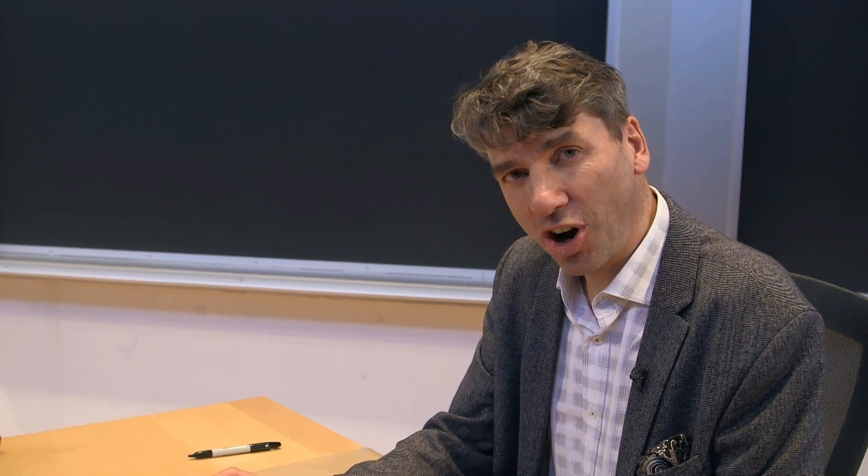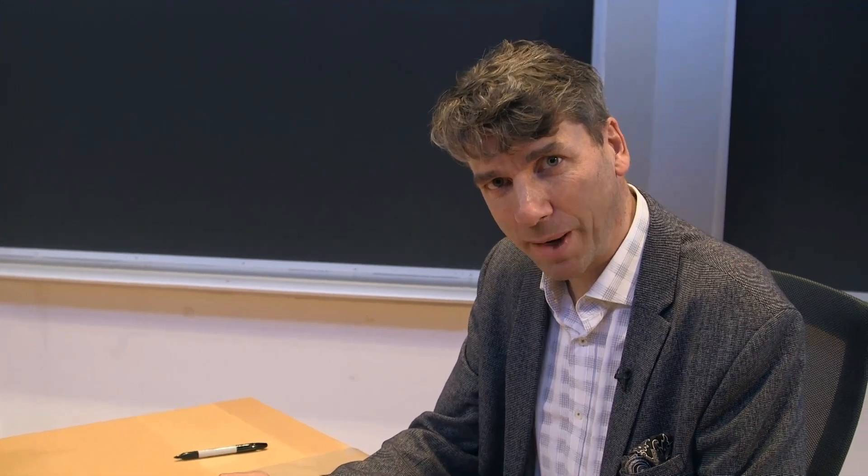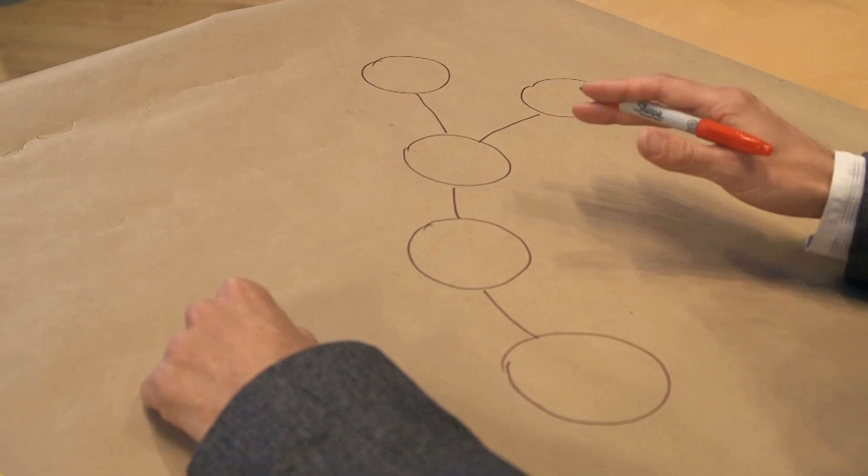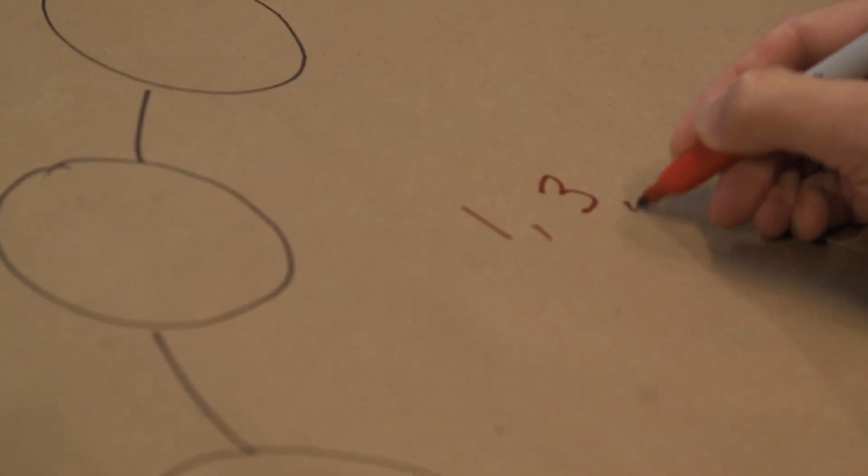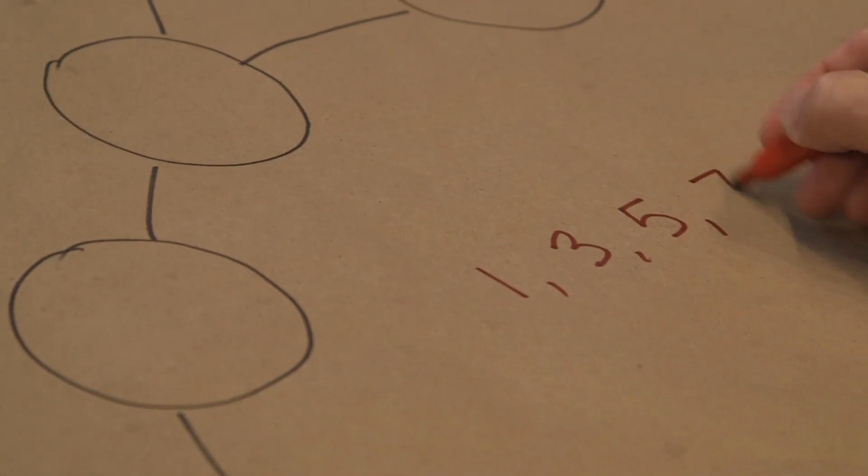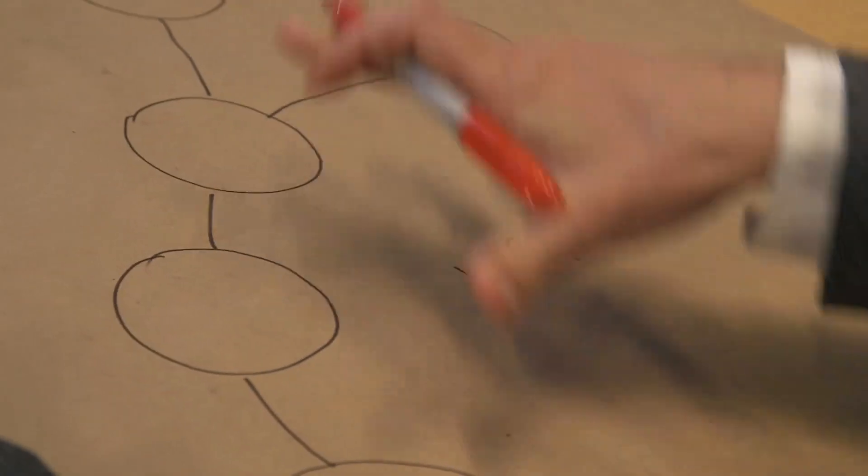We're going to place odd consecutive integers starting with one into this ant. So what are those odd consecutive integers starting with one? Well, we need one, three, five, seven and nine. We're going to be placing them in here.